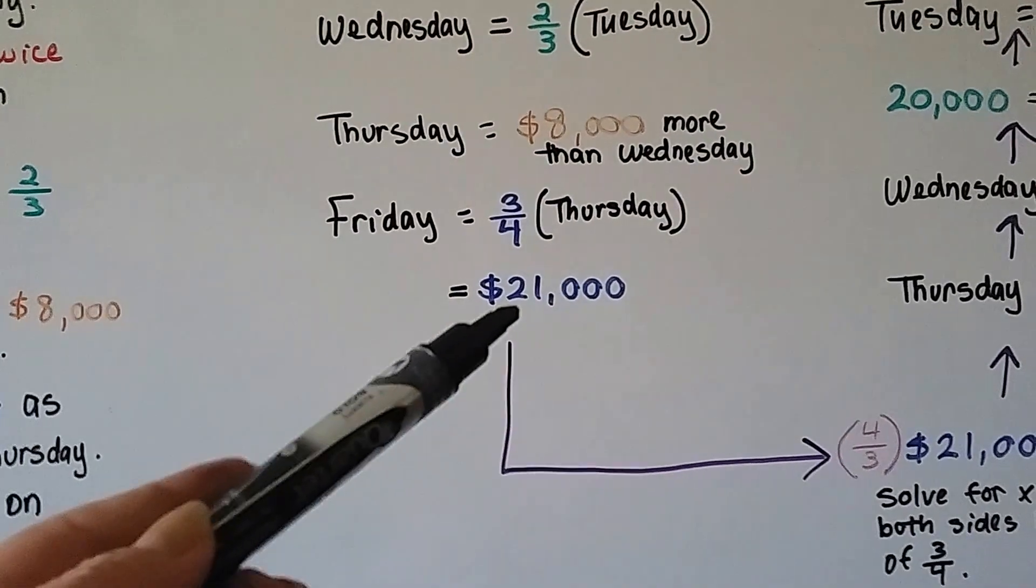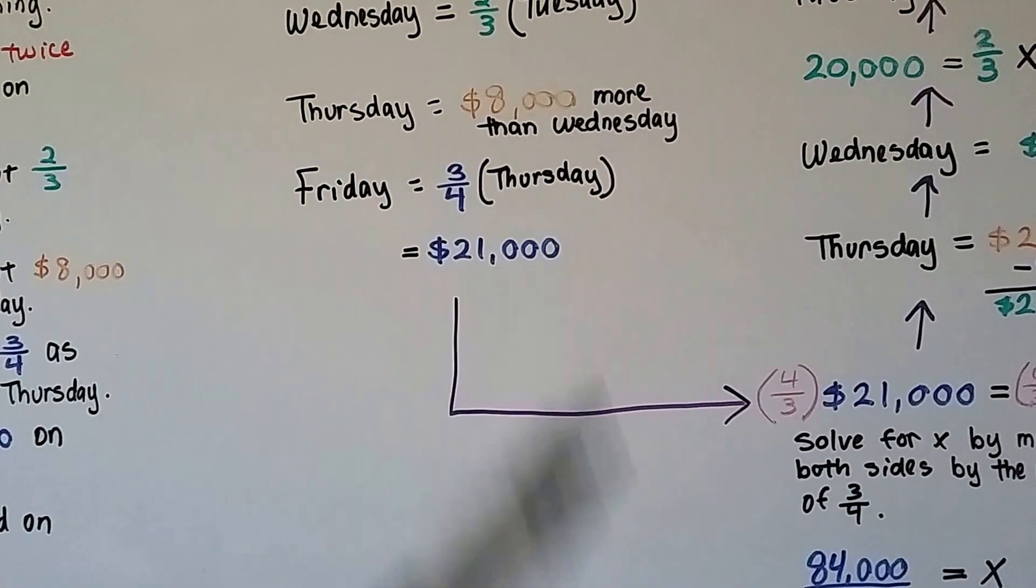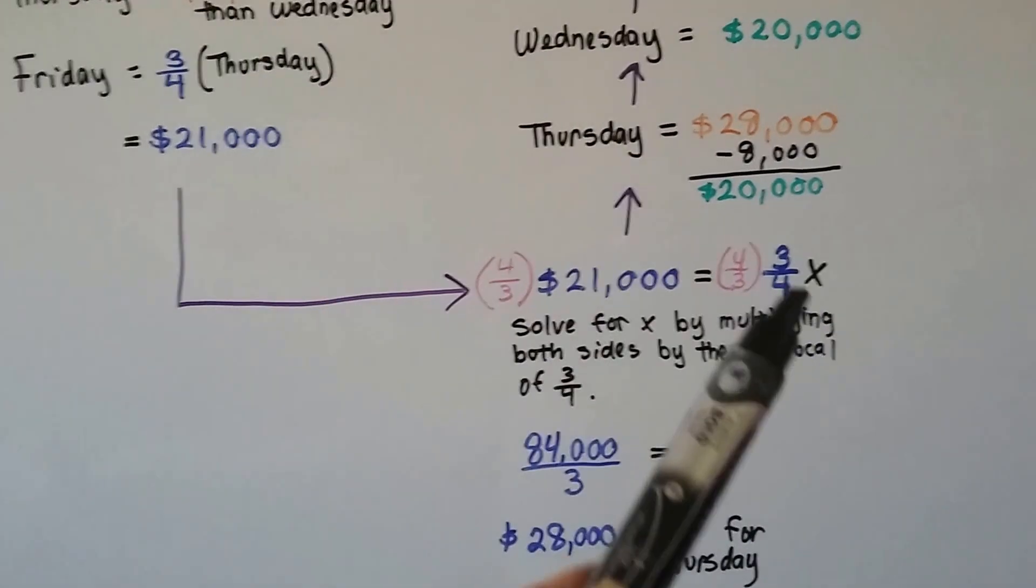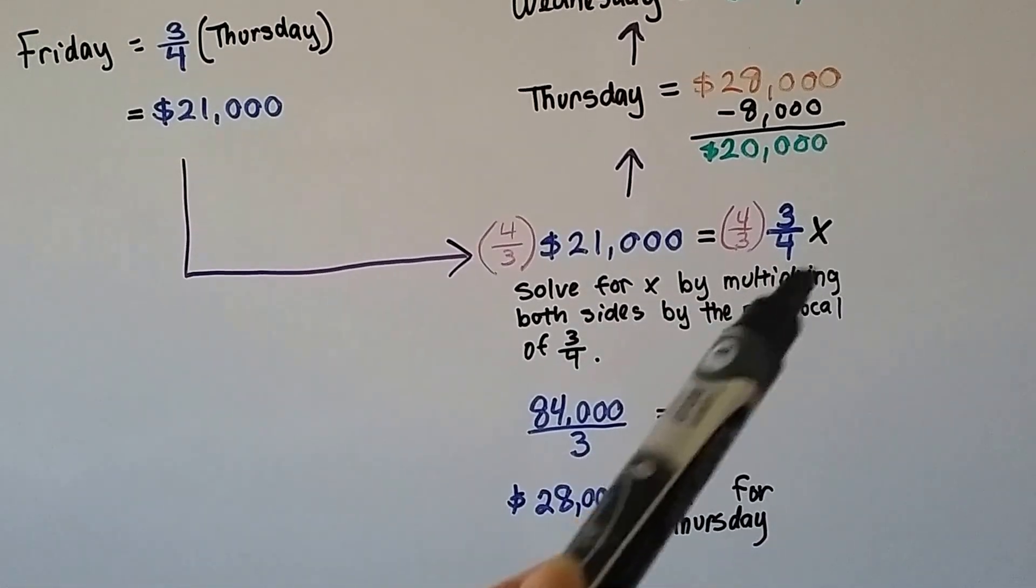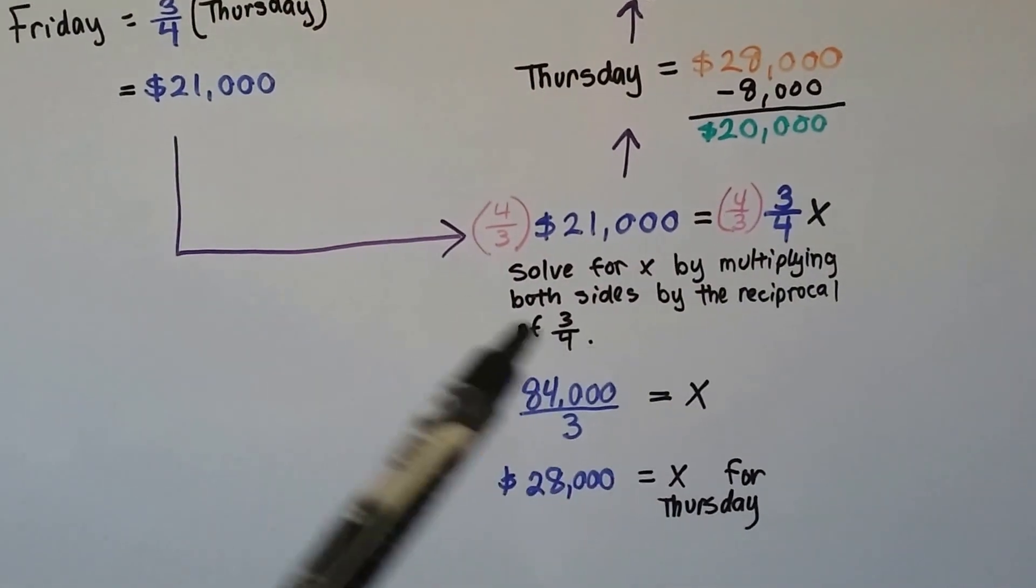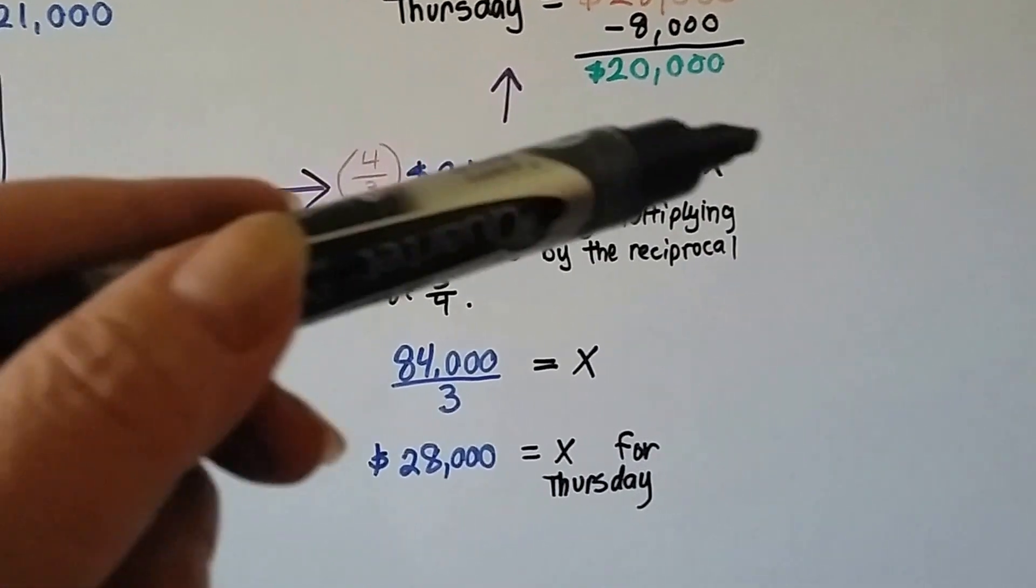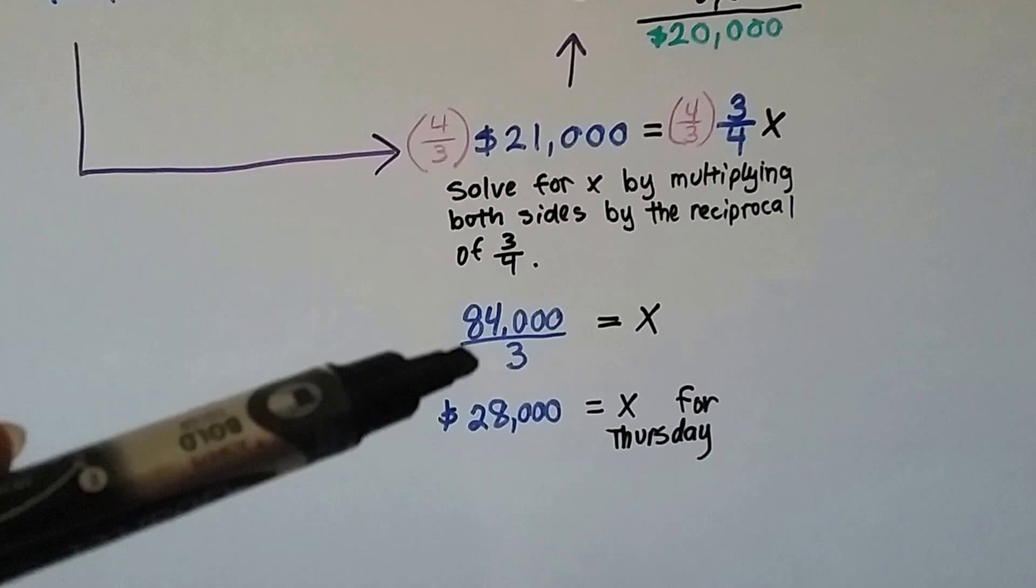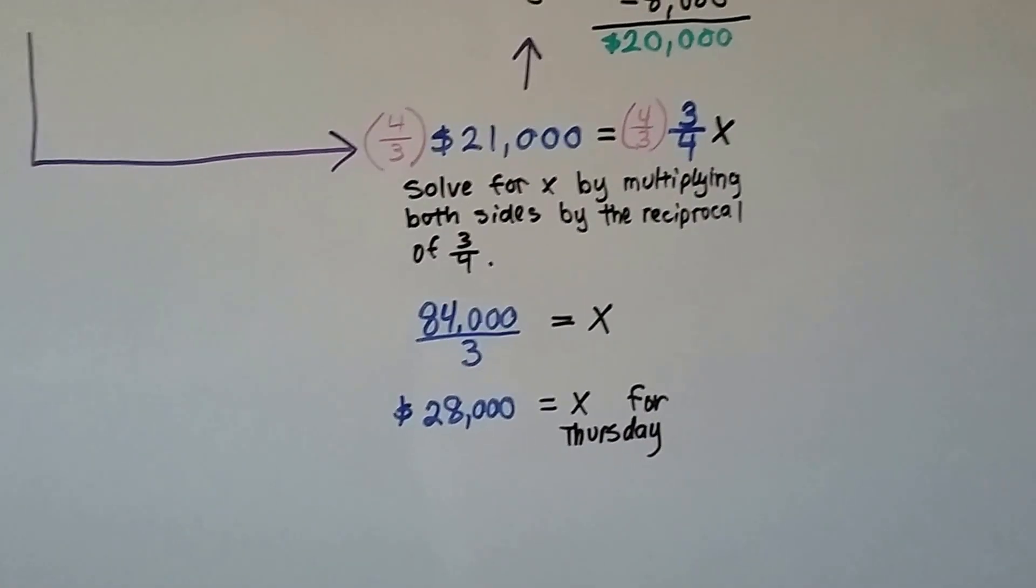So we need to find out what 21,000 is three-fourths of to find what Thursday is. So we can set our equation as 21,000 equals three-fourths x. We multiply both sides by the reciprocal of this three-fourths coefficient to solve for x. So we're going to multiply both sides by four-thirds. When we multiply this side, we get 12-twelfths, which gives us one x. And on this side, it gives us 84,000 divided by three. When we do our division, we get 28,000. So we know Thursday is 28,000.